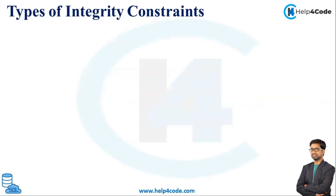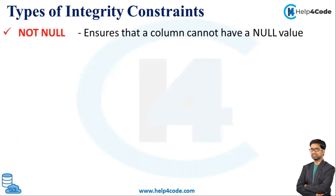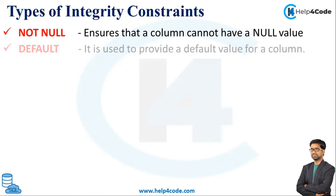So how many types of Integrity Constraints are there in Oracle SQL? The first constraint we are going to discuss is Not Null. Not Null ensures that a column cannot have a null value. The next constraint is the Default constraint, which is used to provide a default value for a column.